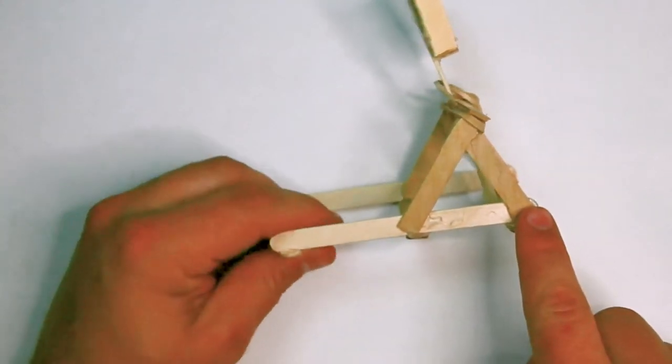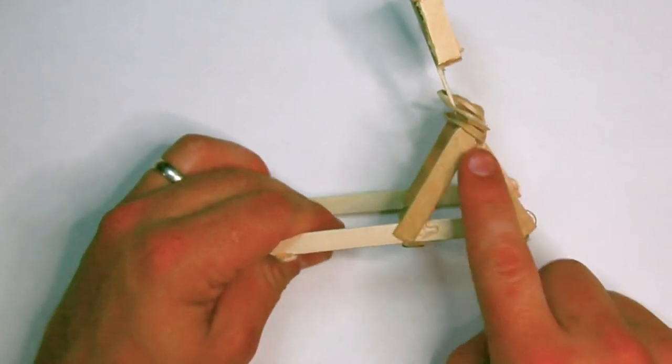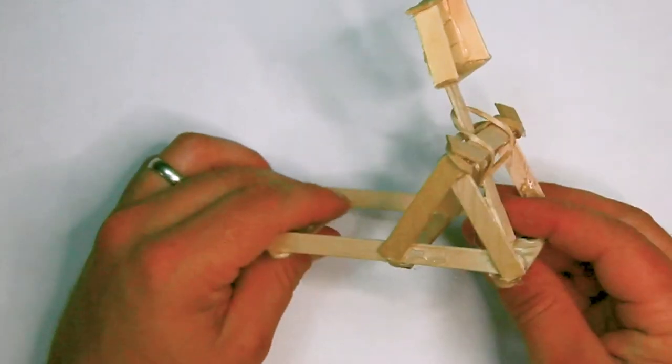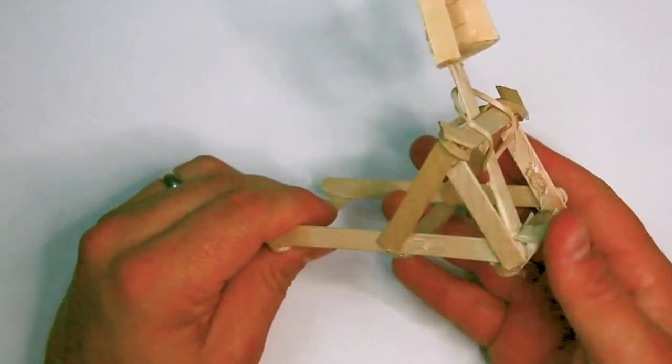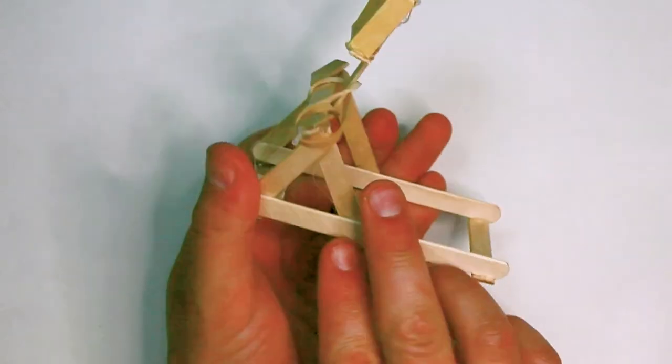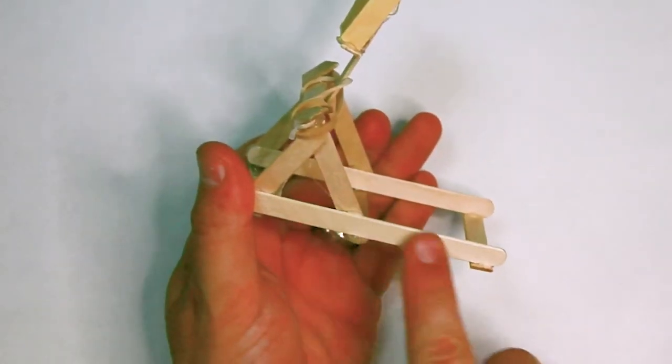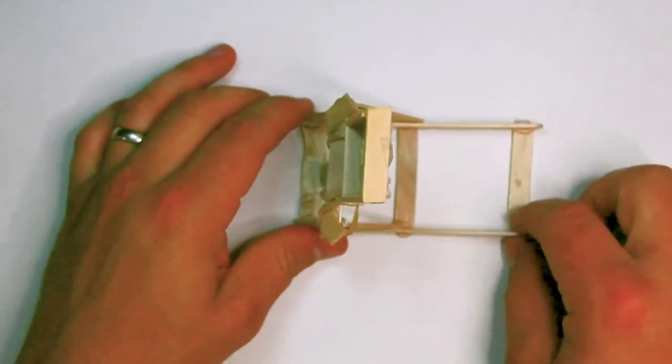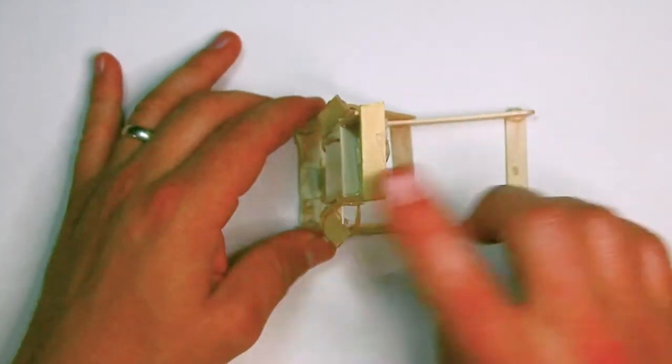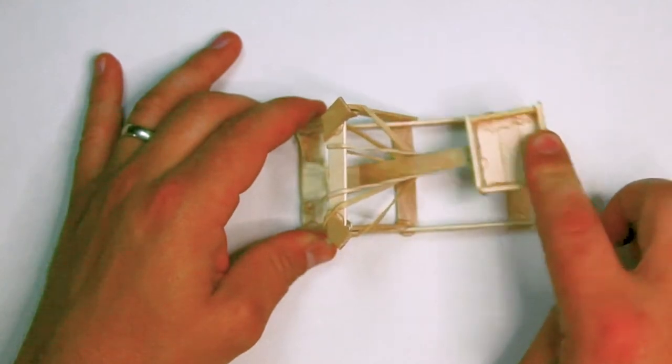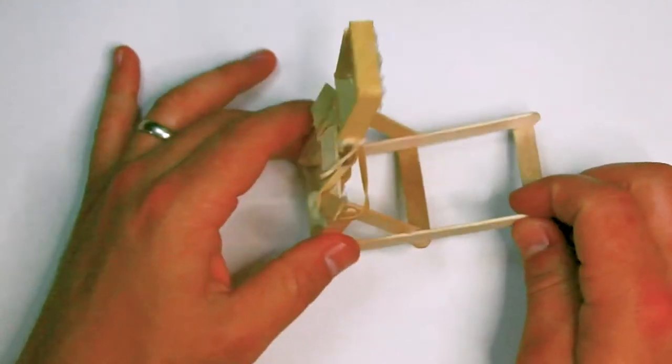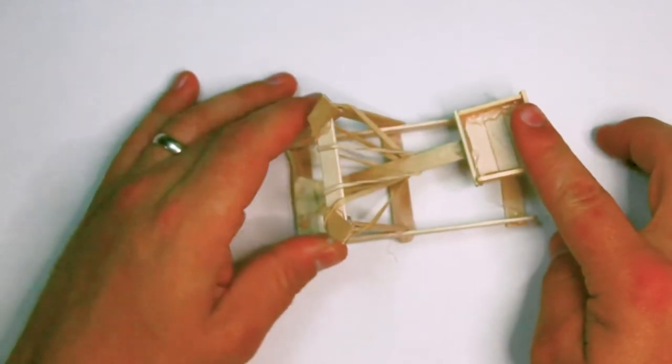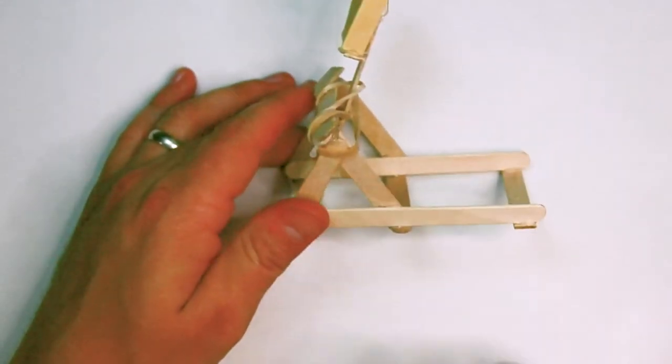This is a simple design that we're going to move forward with. It's got one full popsicle stick at the bottom, two halves of a stick making this triangle here. Now you can see that I made two of these. So there's one here and on this other side there's the exact same thing. Then I connected them with these three half popsicle sticks to make the frame. Lastly, the spoon with the rubber bands. So let's make the frame first.